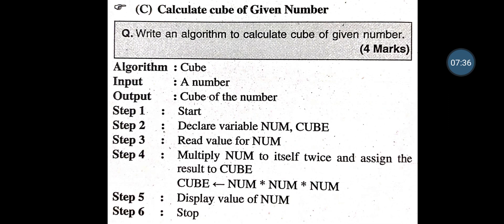Calculate the Cube of a Given Number. Algorithm name is Cube. Input is a single number; output is the cube of the number. Step 1: Start. Step 2: Declare variables Num and Cube. Step 3: Read the value for Num. Step 4: Cube means 3 times multiplication with itself — Cube = Num * Num * Num. Step 5: Display the value of Cube. Step 6: Stop.